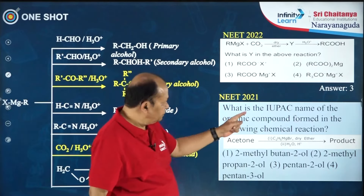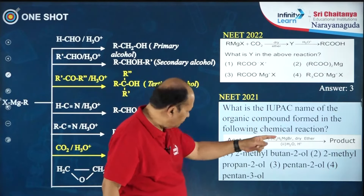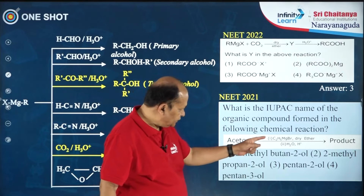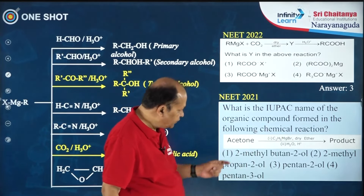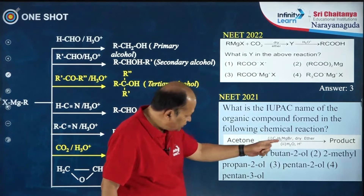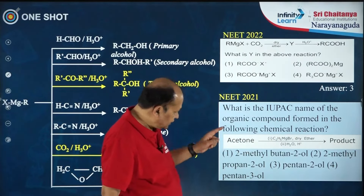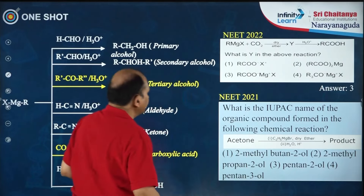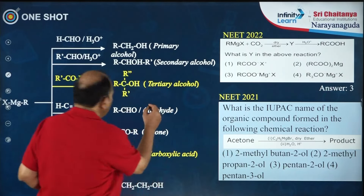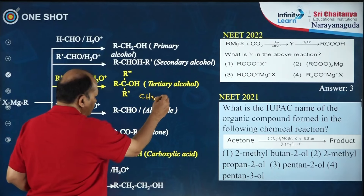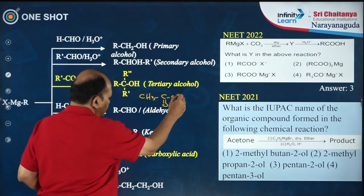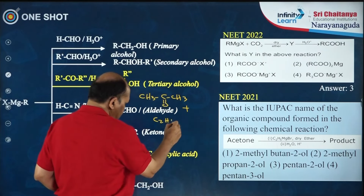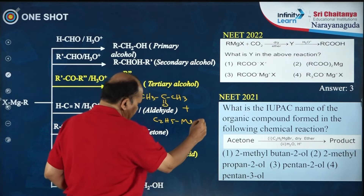One more question: what is the IUPAC name of the organic compound formed in the following chemical reaction? What is happening here — acetone reacting with ethylmagnesium bromide (C2H5MgBr) in dry ether. The intermediate is hydrolyzed to give the product. You have to write the structure first and then write the IUPAC name of the compound.